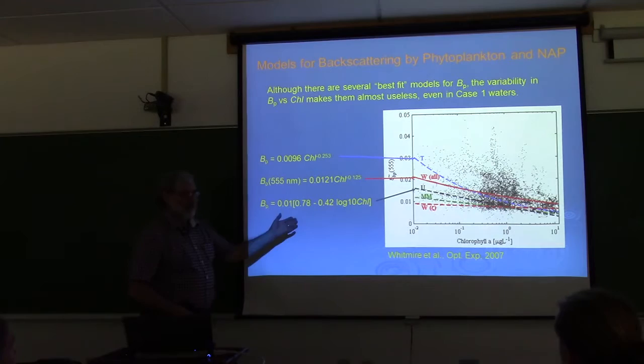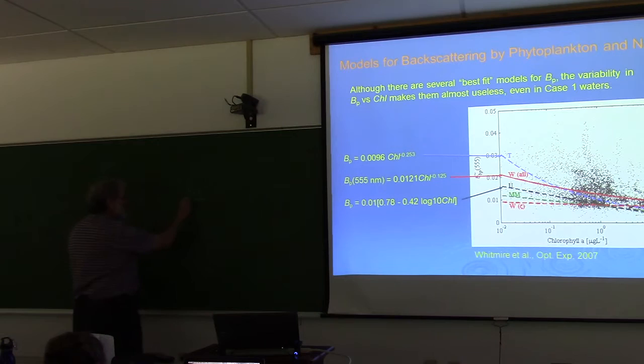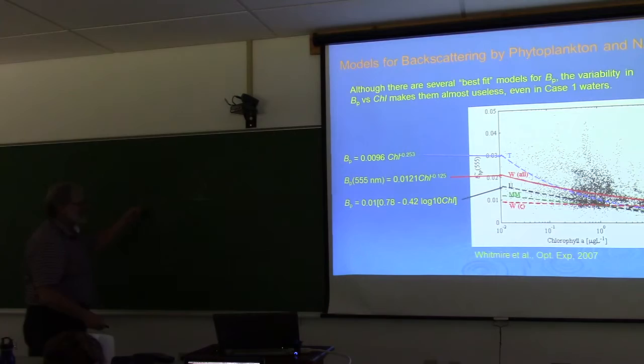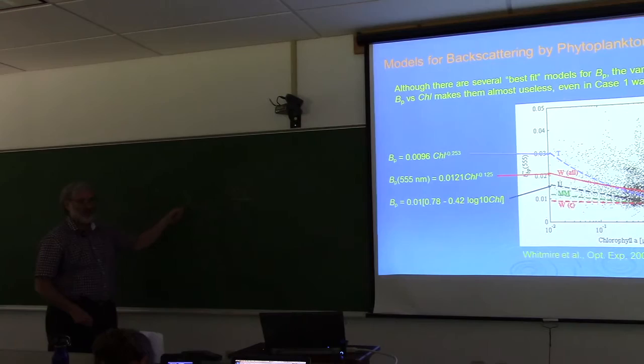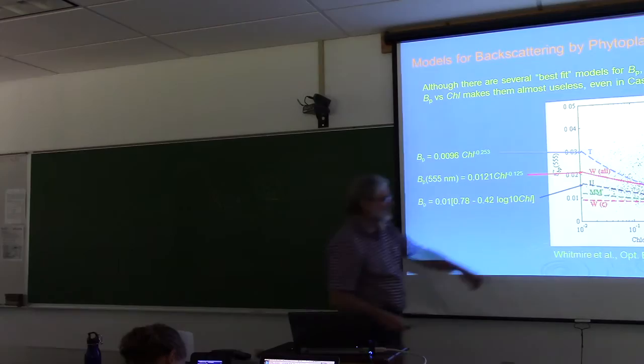Keep in mind: remote sensing reflectance depends to first order on backscatter over absorption. If you change the backscatter coefficient by a factor of three, you change the remote sensing reflectance by pretty much a factor of three. So if your Hydrolight-predicted reflectance differs from your measurement by a factor of two or three, the answer is almost always that you used the wrong phase function or backscatter model.